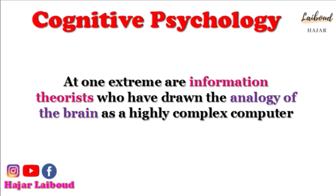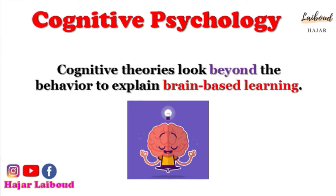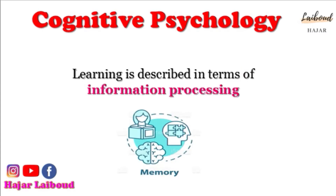In cognitive psychology there were two approaches to cognition. At one extreme are information theorists who draw the analogy of the brain as a highly complex computer and seek to explain its working in terms of rules and models of how aspects of learning take place. These theories look beyond behavior to explain brain-based learning, which is a theory based on the structure and function of the human brain — that is to say, as long as the brain is not prohibited from fulfilling its normal processes, learning will occur.